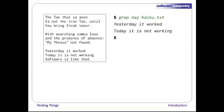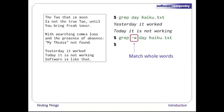Let's try a different pattern, 'day'. The output is lines containing the words 'yesterday' and 'today', which both have the letters D-A-Y. If we give grep the -w flag, it restricts matches to word boundaries so that only lines with the word 'day' will be printed, not lines with 'today' or 'daytime'. In this case, there aren't any, so grep's output is empty.